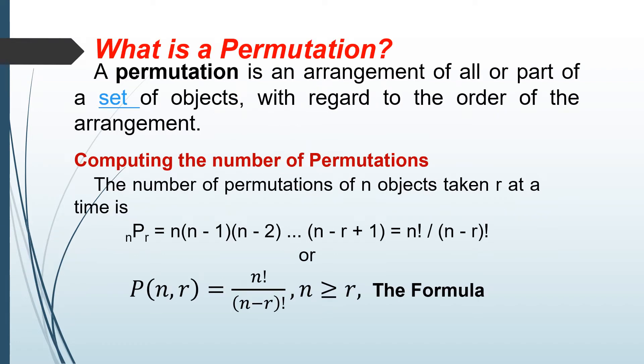So what is a permutation? A permutation is an arrangement of all or part of a set of objects with regard to the order of the arrangement.